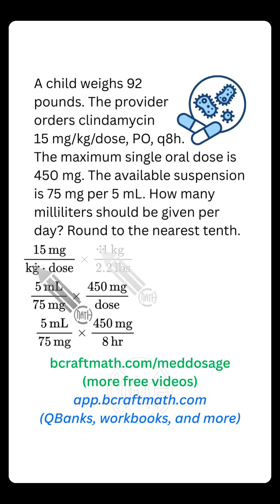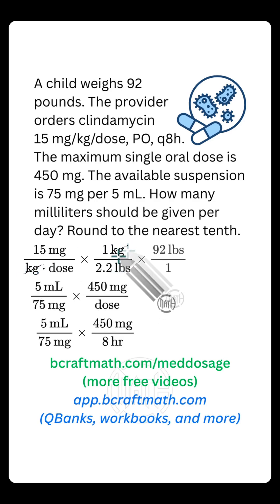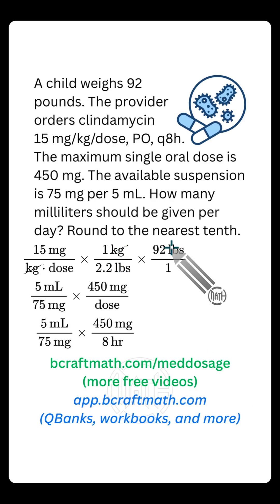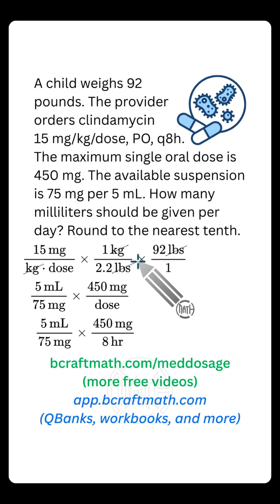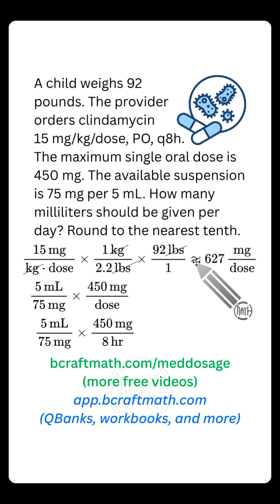We've got to get rid of kilograms, and I'm using 1 kilogram equals 2.2 pounds for two reasons: one is that we can cancel out the kilograms, and the second reason is so that we can tie in the child's weight of 92 pounds, canceling out our pounds. If we multiply our top numbers — 15 times 92 — and divide by our bottom number of 2.2, we get approximately 627 milligrams per dose.